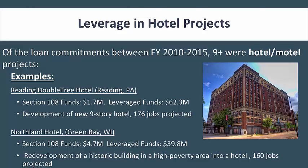The next project is hotel redevelopment. In this example, the Reading DoubleTree Hotel in Pennsylvania used $1.7 million in Section 108 funds and leveraged $62.3 million. This project is projected to create 176 jobs. The Northern Hotel in Green Bay, Wisconsin used $4.7 million in Section 108 funds and leveraged $39.8 million. This is for the redevelopment of a building on the National Register into a hotel in a high-property area.